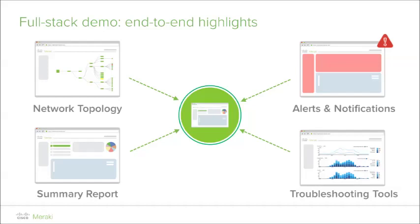With network topology, a real-time topology depiction reveals appliances that are alerting or offline, along with intelligence such as link speed, connected clients, and other data with the hover of a cursor.